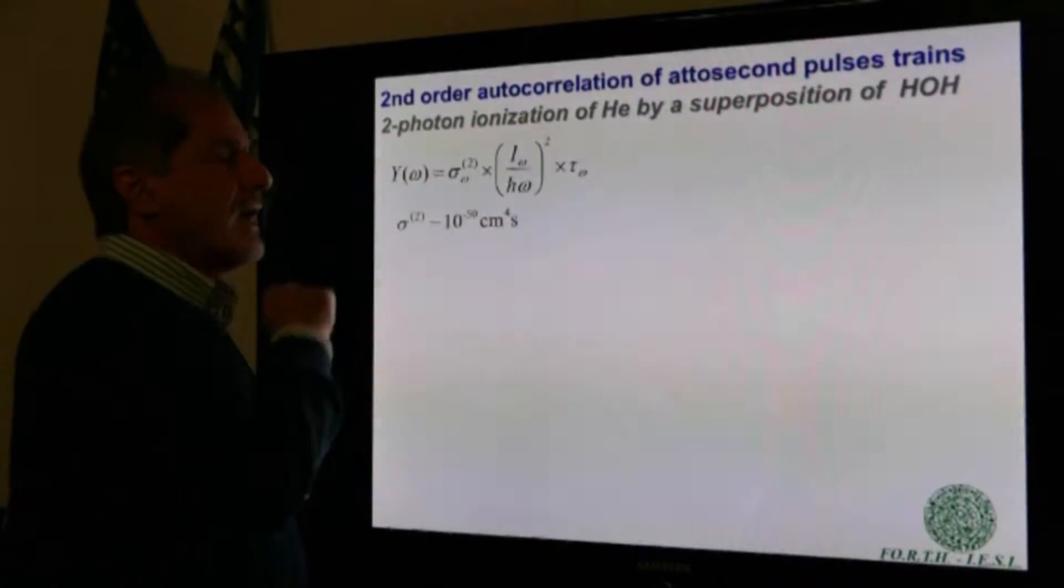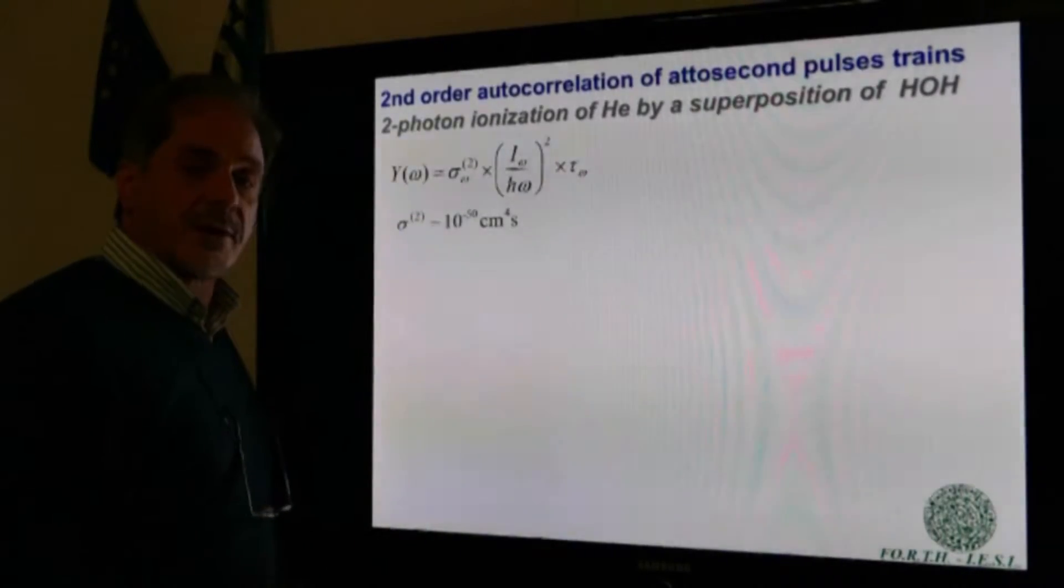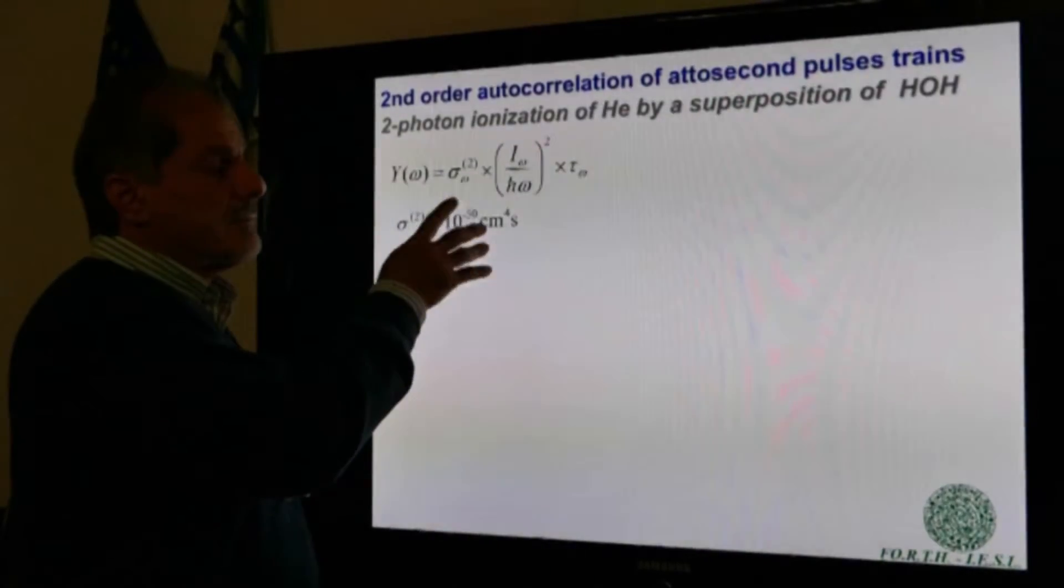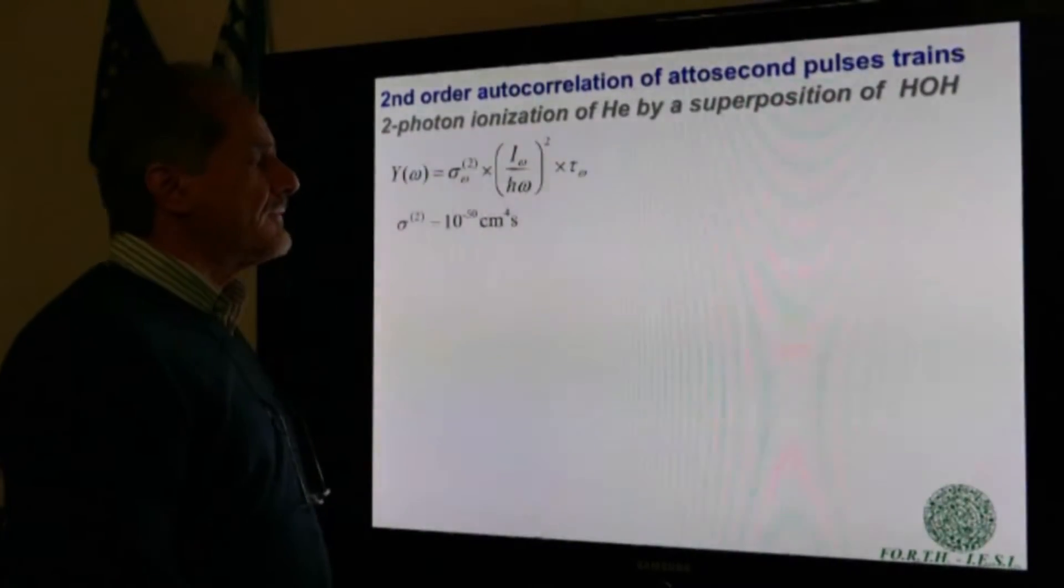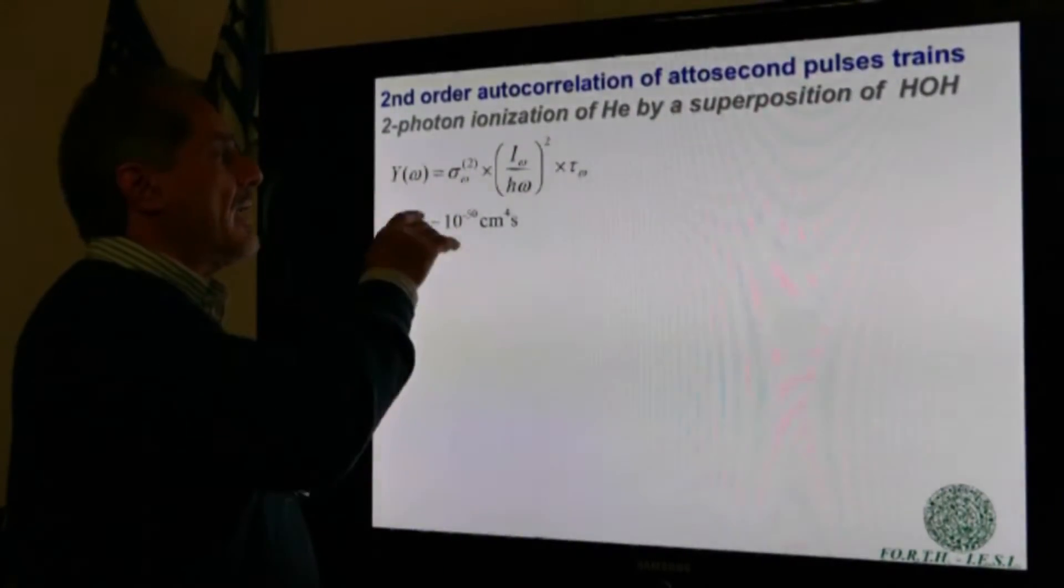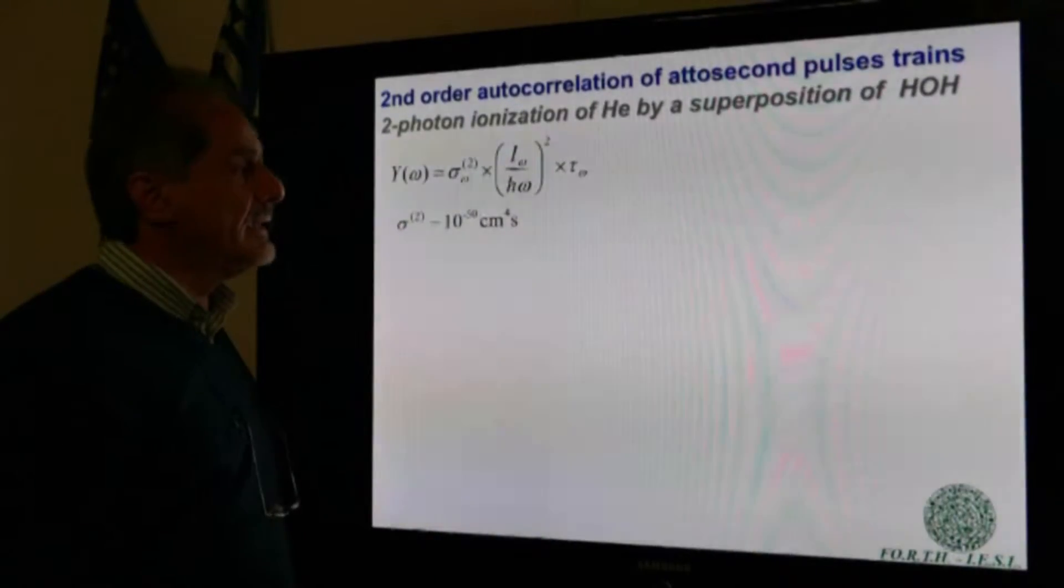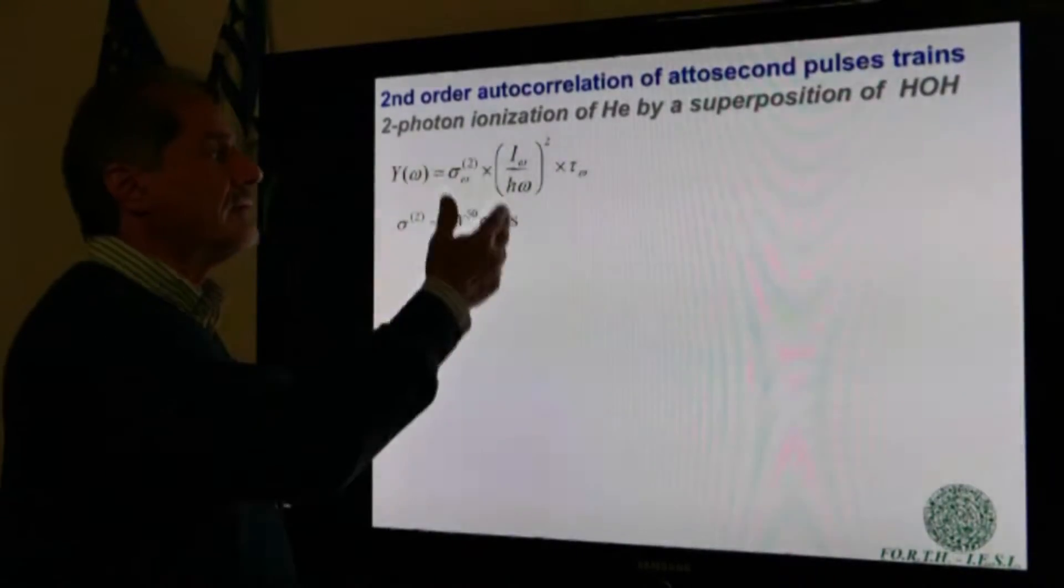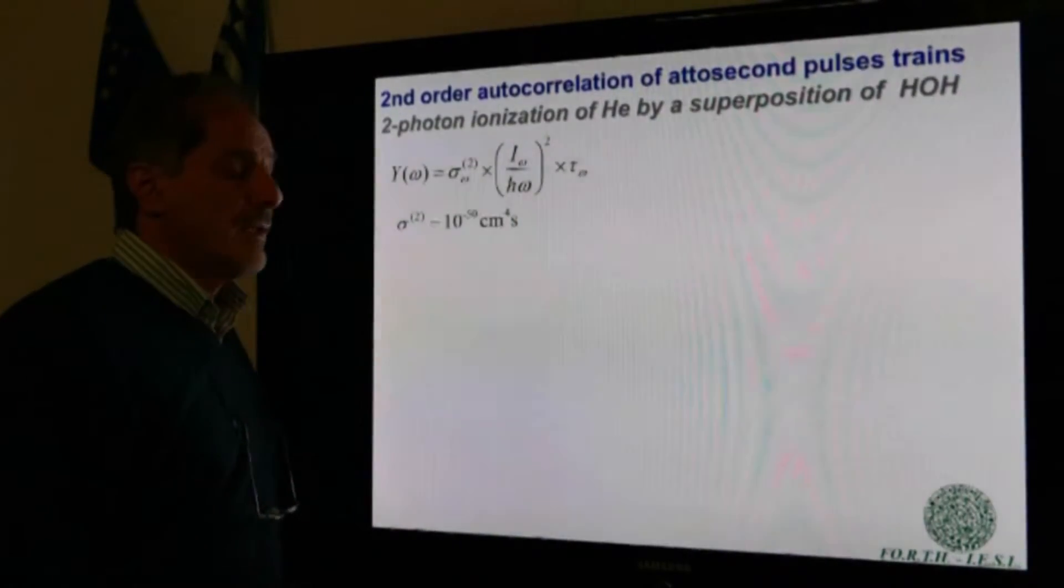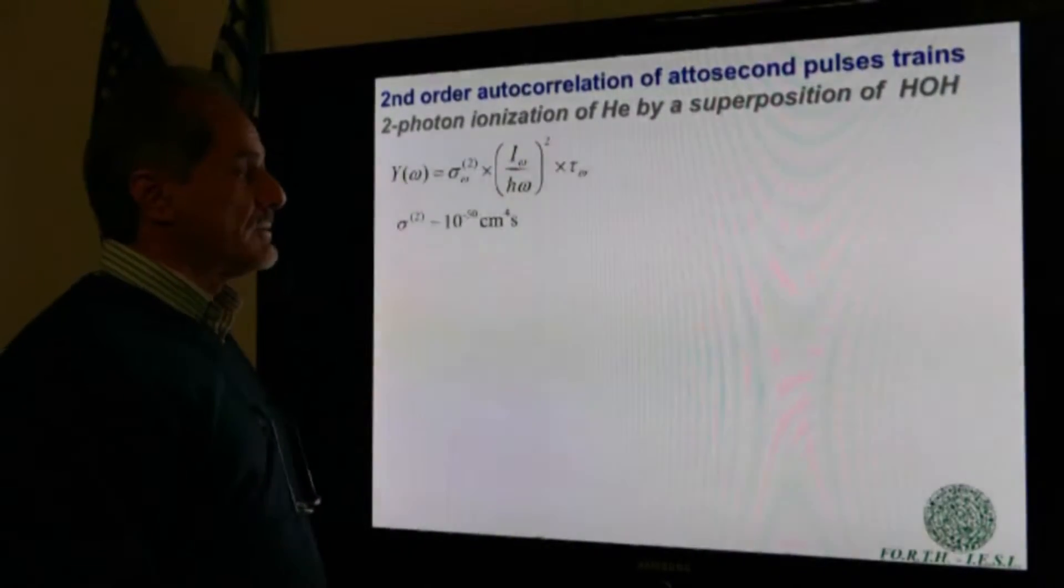where flux is intensity divided by the photon energy. The proportionality factor here is the so-called generalized two-photon ionization cross-section, which is a rather small number, something like 10^-50 cm^4·s. For this reason, in order to have some measurable yield, we need to have rather high XUV intensities. This was the reason that for several years this process could not be observed.